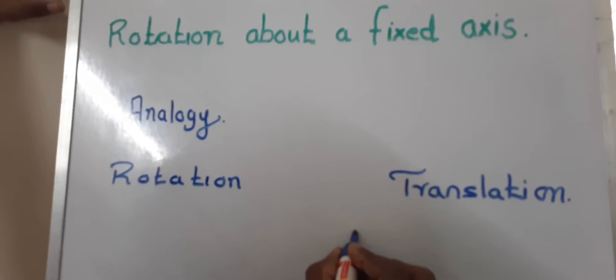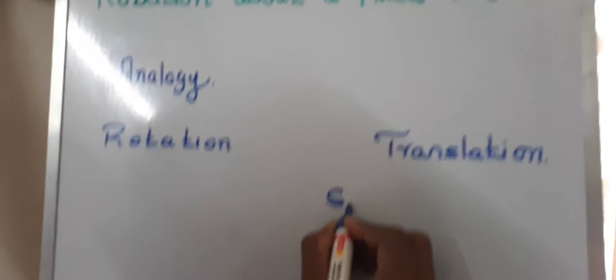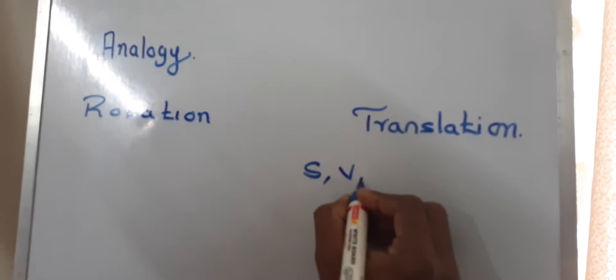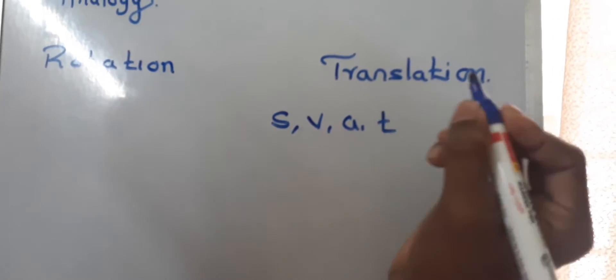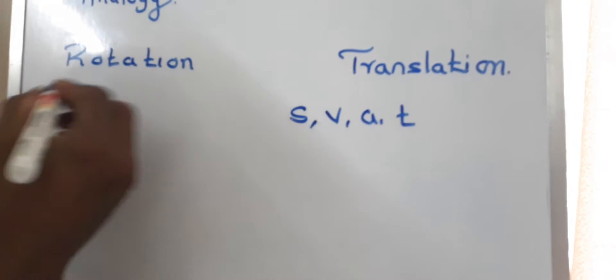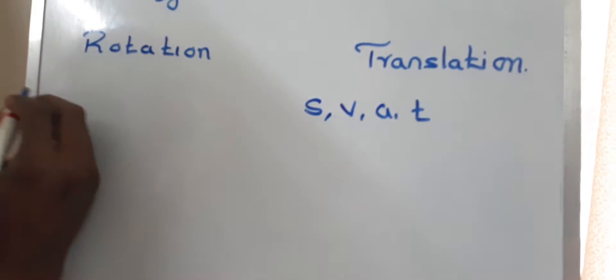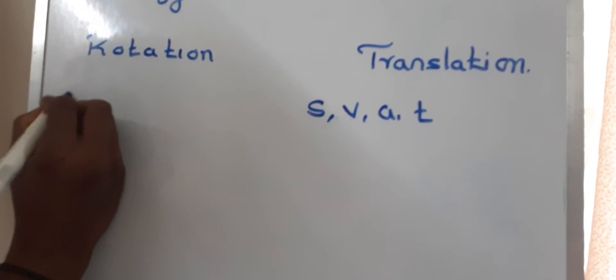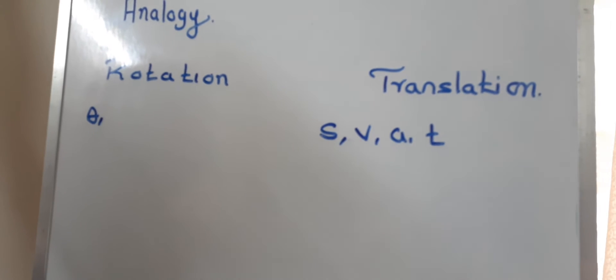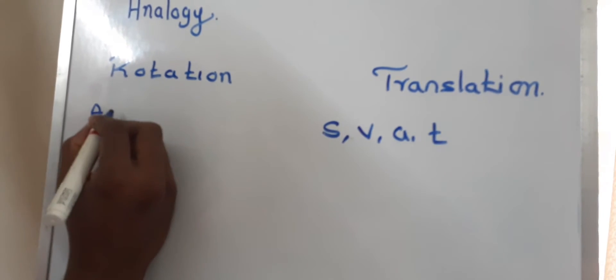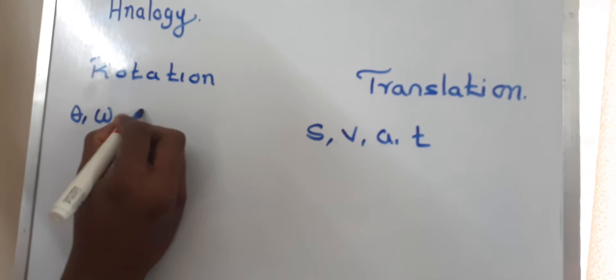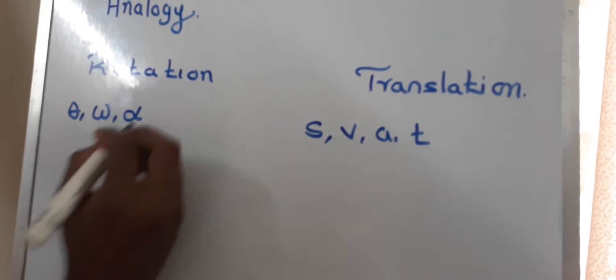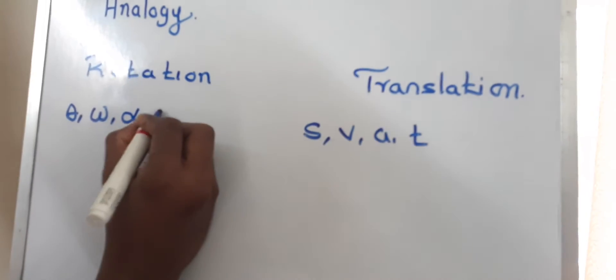In translation, we use parameters like linear distance, velocity, acceleration, and time. In rotation, instead of linear displacement we use angular displacement theta, instead of velocity we use angular velocity omega, acceleration becomes angular acceleration alpha, and time remains the same.